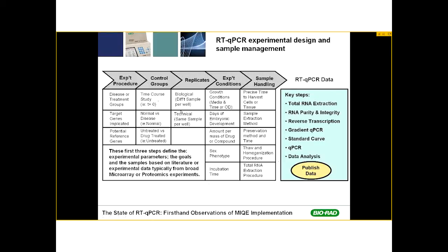You also define how many technical replicates you'll do — the same cDNA derived from a biological sample pipetted into multiple wells on a qPCR plate. These first three steps define the experimental parameters, goals, and samples based on the literature and presumably data from a broader microarray or proteomics experiment, where you've defined these parameters based on previous work using some other form of experimental data.